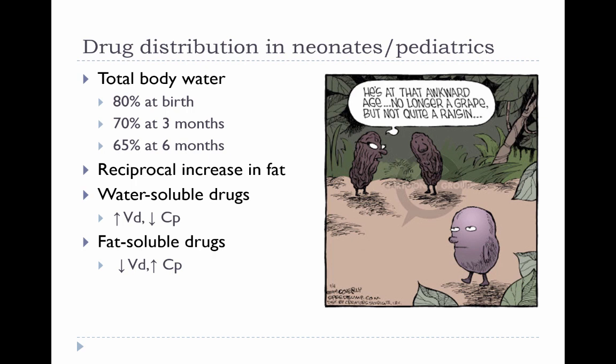Moving on to drug distribution: the biggest factor affecting distribution in neonates and pediatrics is that they are mostly water when born — about 80% body water content at birth, decreasing to about 60% in the adult, with a reciprocal increase in body fat. If you administer a water-soluble drug to a neonate, there is a higher volume of distribution, so it distributes into more body water, resulting in a lower plasma concentration. The opposite is true for fat-soluble drugs — in neonates, the volume of distribution will be smaller due to less body fat, potentially yielding a higher-than-expected plasma concentration.